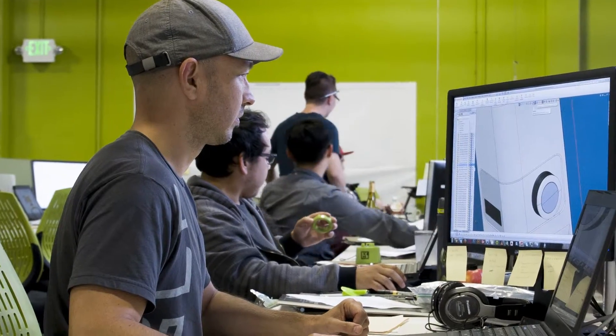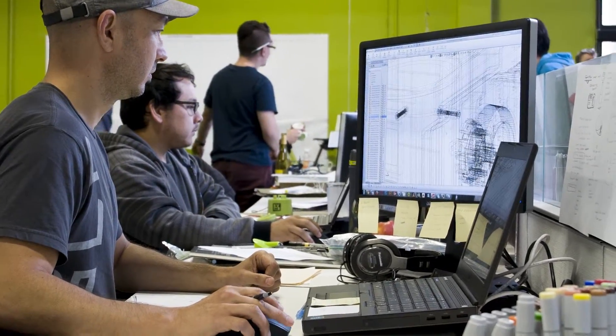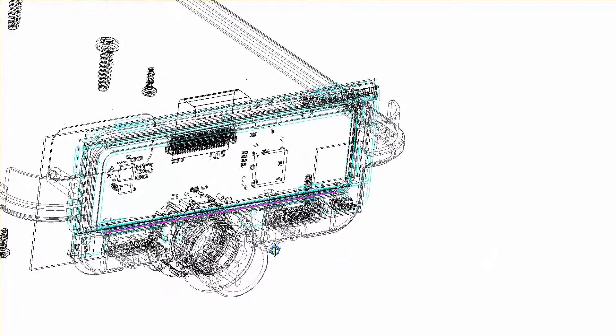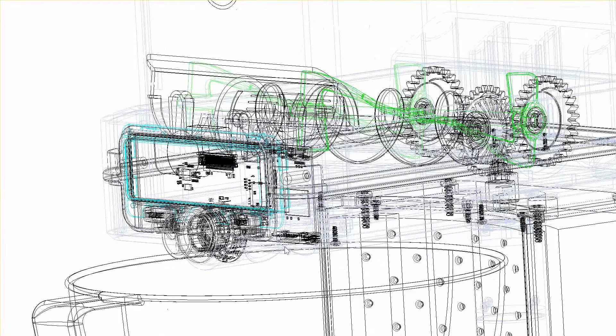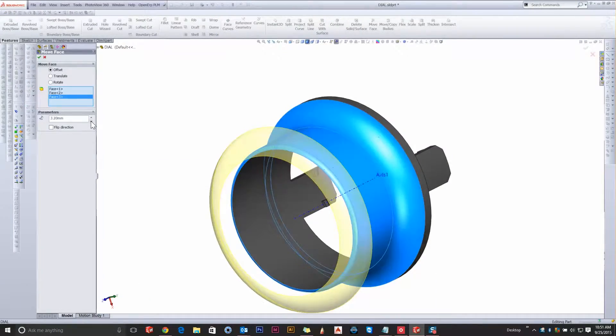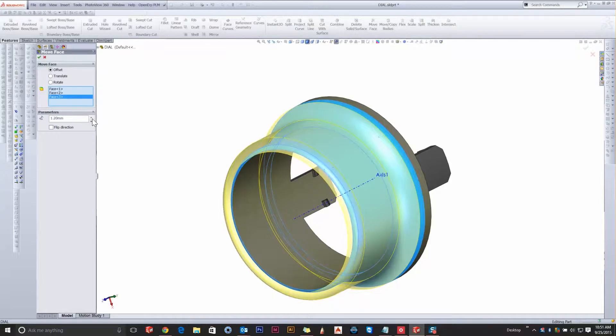When designing your prototype, engineers work in computer-aided design software known as CAD. CAD is an asset to the design process because model dimensions can be altered with dimensional accuracy and precision, saving time between iterations.